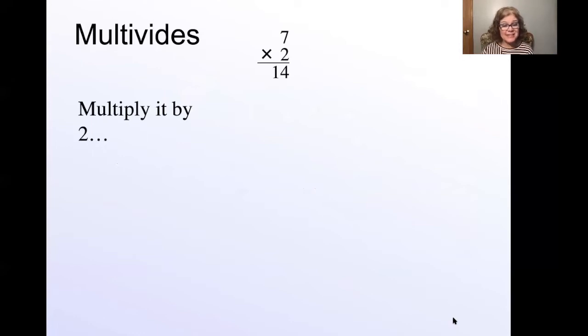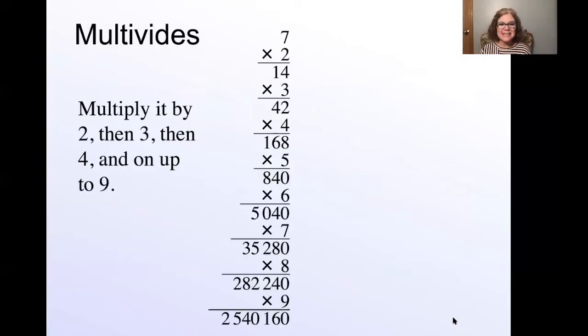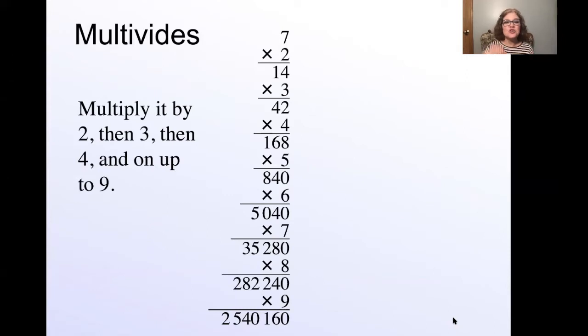Now you take that 14 and you multiply it by three and you get 42. You take the 42 and you multiply it by four. You take that answer and you multiply it by five and then by six and by seven and eight and nine. So you go all the way through two through nine. And that's just the multiplication portion of the multivide.